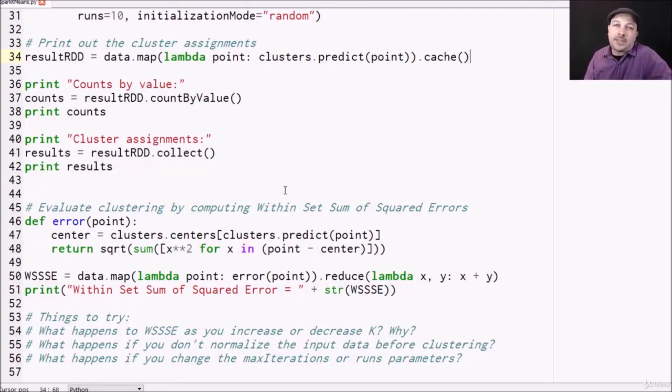All it is, we look at the distance from each point to its centroid, the final centroid in each cluster, take the square of that error and sum it up for the entire data set.